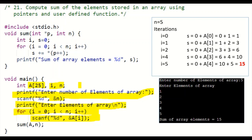To find the sum of elements of the array, we are using a user-defined function called sum. The first parameter is a pointer to the first element of the array — we can give ampersand a of 0 or just a, because the name of the array itself is the pointer to the first element. The second parameter n is the number of elements of the array.